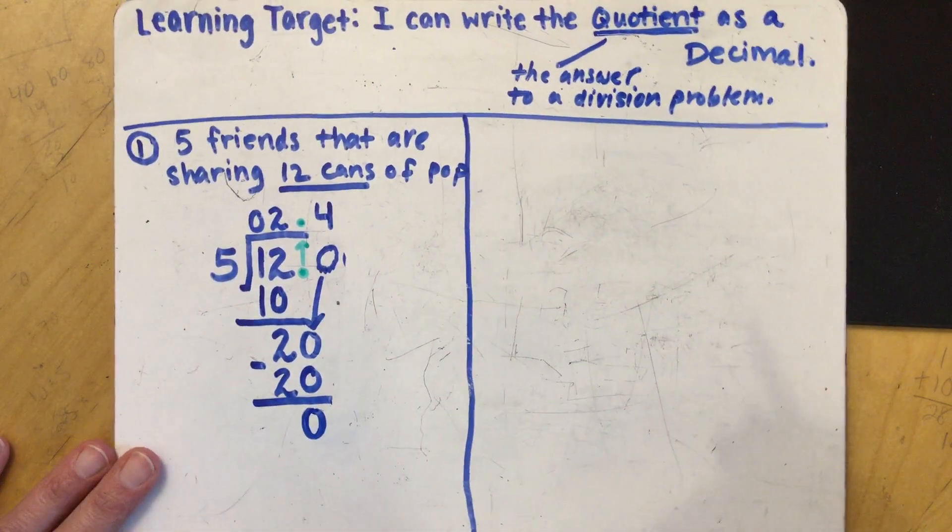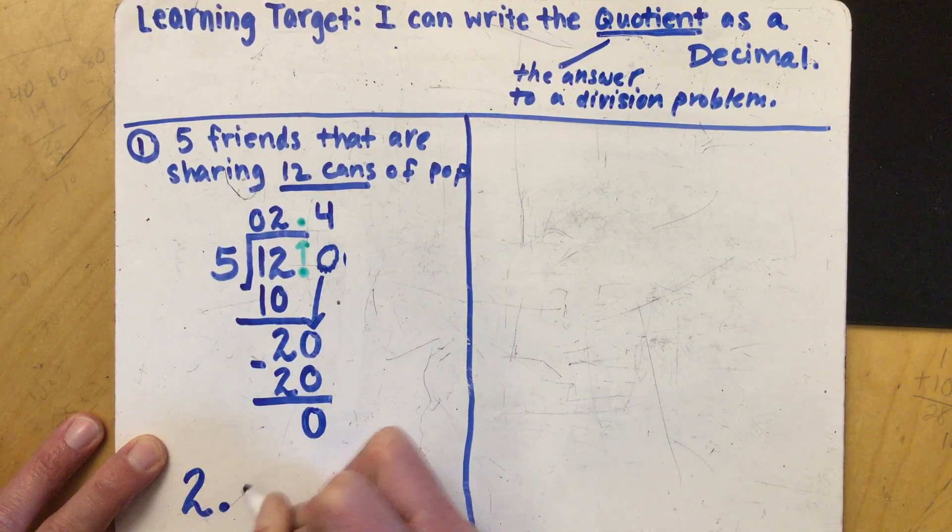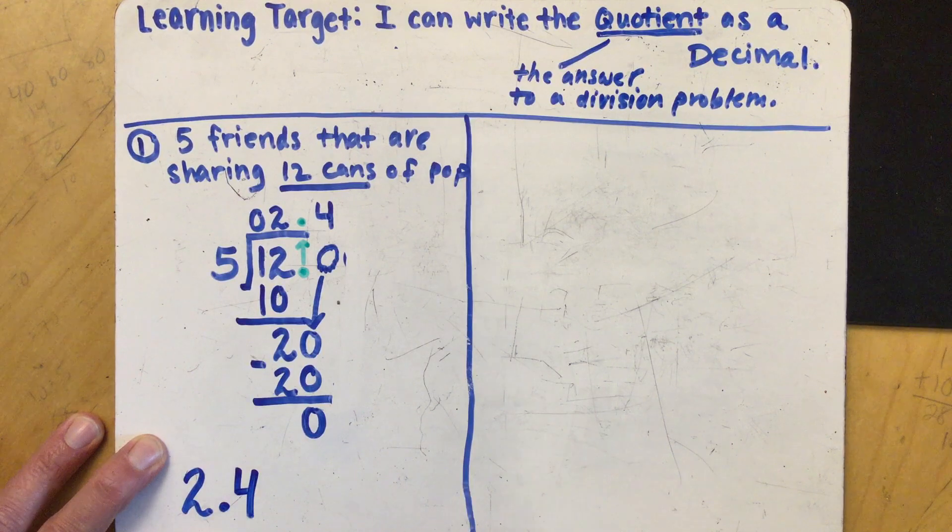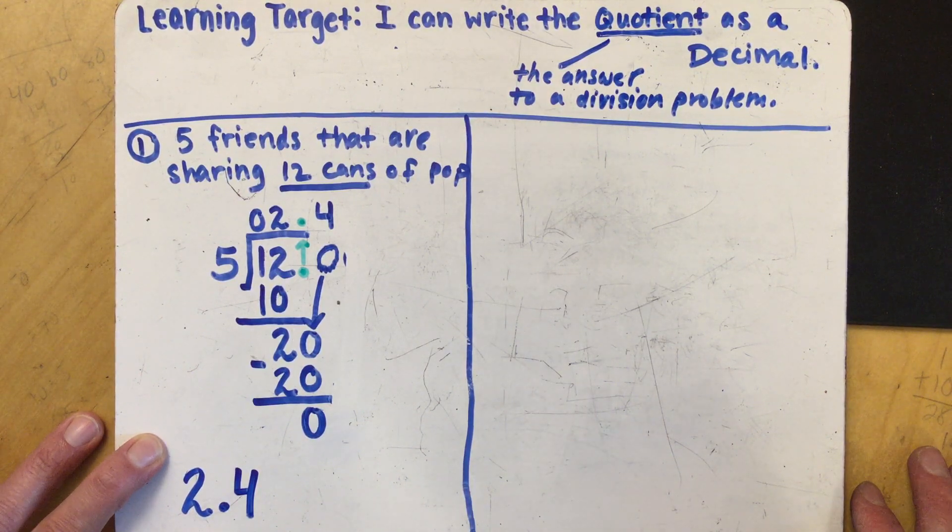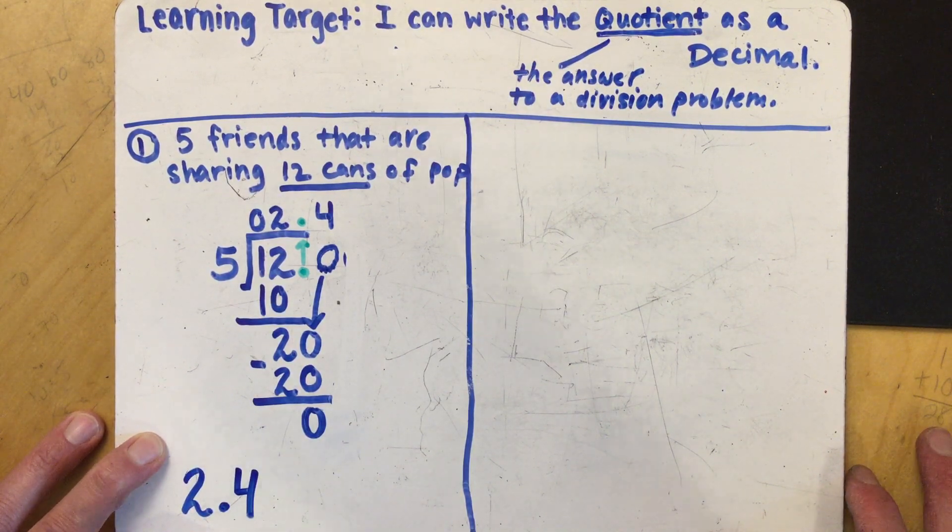So our quotient to this problem it turns out that each person is going to get two and four tenths of a can of pop. I hope they have fun trying to divvy up that last can of pop so that they each get four tenths.